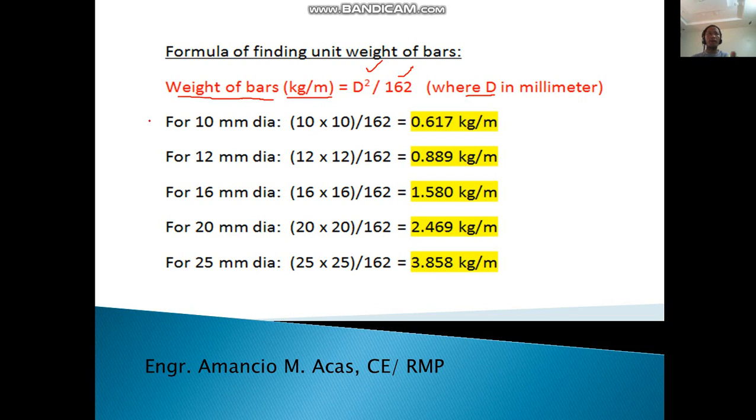For example, we'll compute the values in the table based on the formula. For 10mm diameter, we multiply it two times: 10 times 10 divided by 162 equals 0.617 kilogram per meter. For 12mm: 12 times 12 divided by 162 equals 0.889 kilogram per meter.